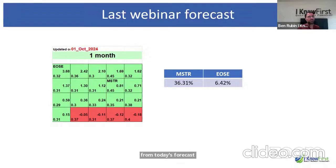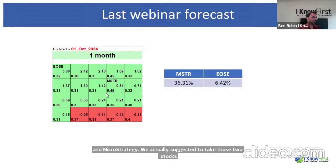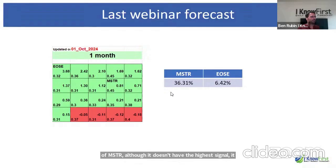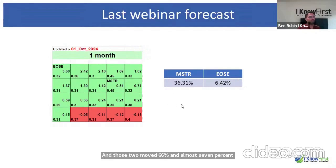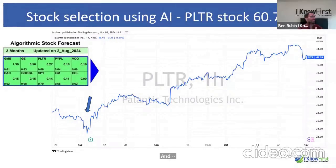For those who were with us in the last webinar, we highlighted two stocks for the one-month period: EOSC for its highest signal, and MSTR for its highest predictability. Despite MSTR not having the highest signal, its predictability stood out. Those two moved 66% and almost 7% respectively since October 1st. And as we speak, MSTR is jumping another 11%, so adding that to the previous 36% gives you a very nice return.